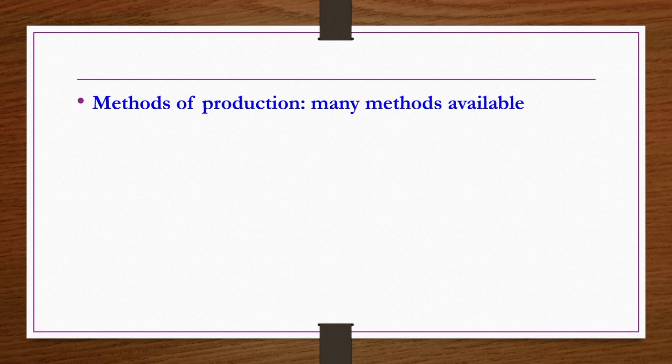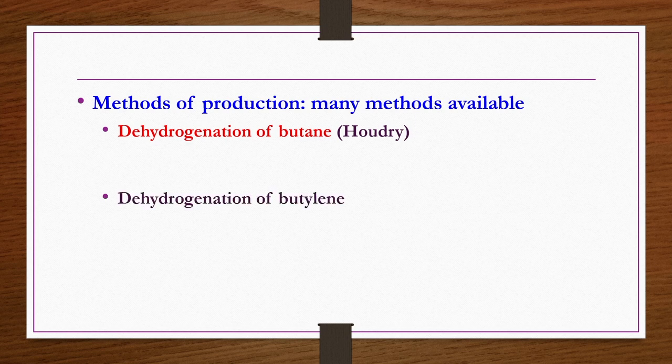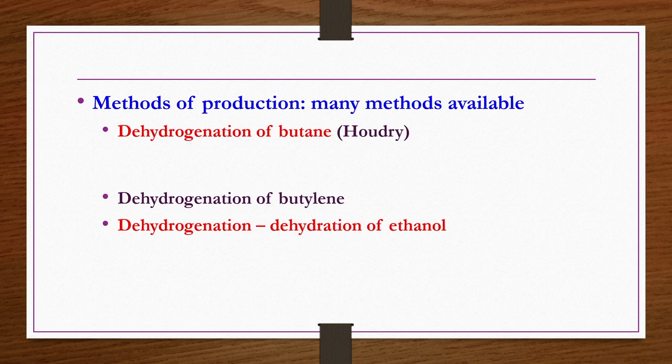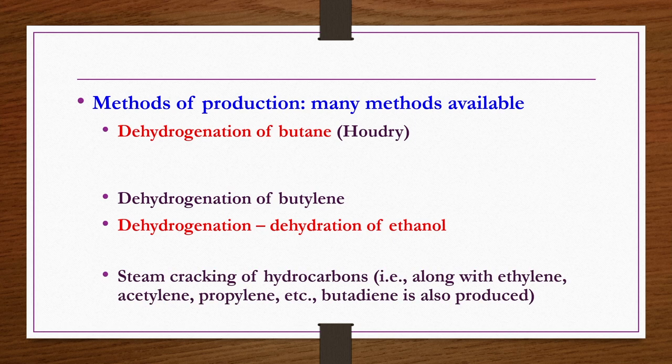Methods of production: many methods are available, but four important commercial methods are shown here. First is dehydrogenation of butane — the Houdry process. Second is dehydrogenation of butylene. Third is dehydrogenation and dehydration of ethanol. Fourth is steam cracking of hydrocarbons.